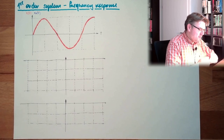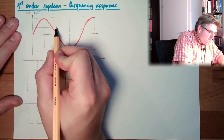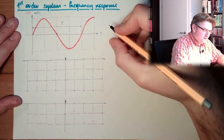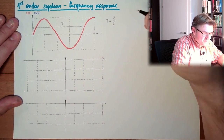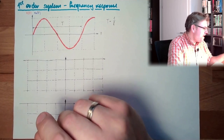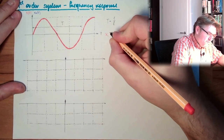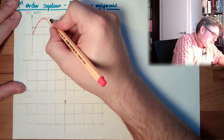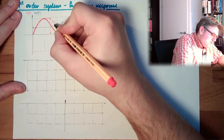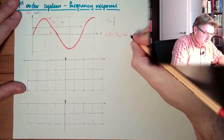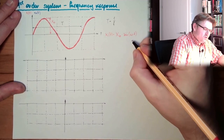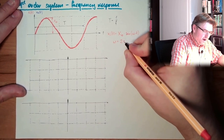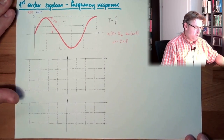We have the periodic time. This is the periodic time T, and this T equals 1 divided by the frequency. The formula: XI from T is XI zero — the amplitude — multiplied by sine of omega t. And this omega is the circular frequency, and this is 2 pi multiplied by the frequency F. So these are the dependencies.